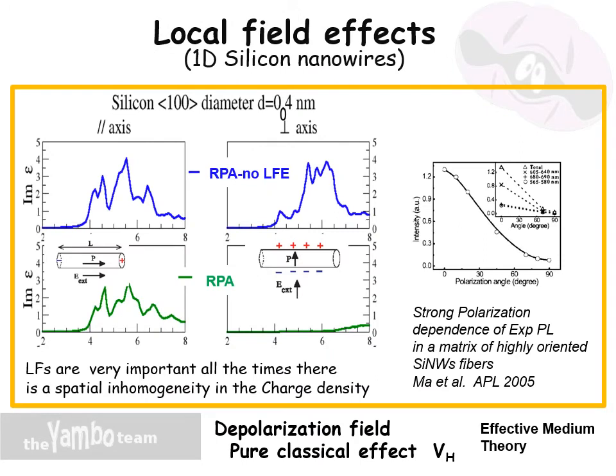Interestingly, an anisotropic behavior of local field effects is visible also for the imaginary part of the dielectric function for low-dimensional materials, like silicon nanowires. While the optical response for light polarized along the wire axis changes only slightly when local field effects are included, they have a huge dramatic effect for light polarized perpendicular to the wire axis. This effect is called the depolarization field. Let me point out that this is a pure classical effect that can be explained very well, at least at a qualitative level, by effective medium theory, and is clearly observed experimentally in all low-dimensional materials like nanowires, nanotubes, and 2D materials.